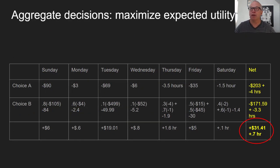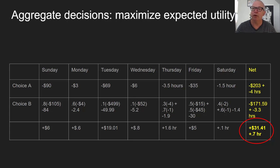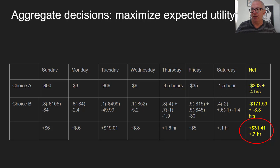Think of it like this: on Sunday through Saturday you had a choice between A or B. Choice A in each case has a fixed value — say you buy a toaster or microwave for $90, then on Monday a cup of coffee for $3, then Tuesday insurance on a laptop, and so on. Imagine all these cases where you make choices that cost you money or hours. This argument works not just for money lost but for money gained.